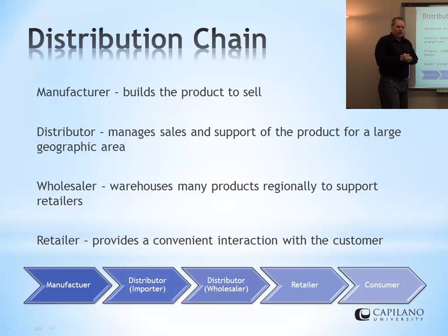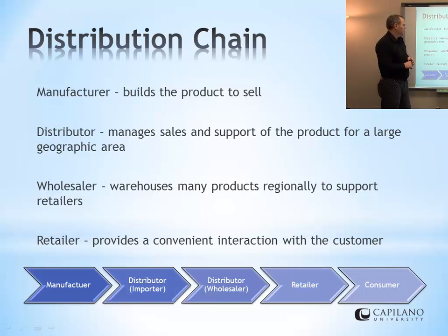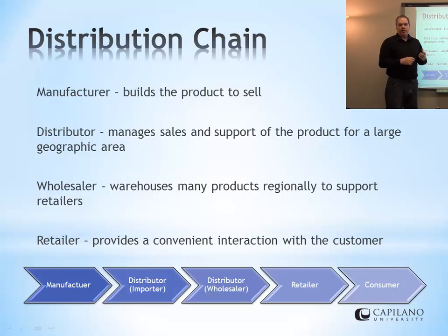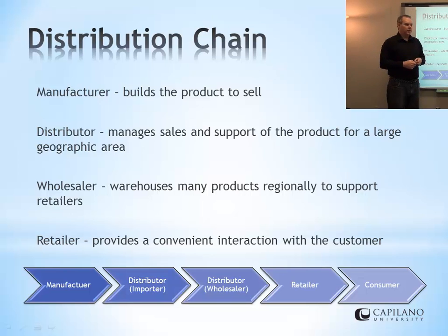Looking at each role: a manufacturer builds products to sell — they may have a whole supply chain before them for raw materials, but from our point of view, they make the product. The distributor manages products and supports large geographic areas — you might have one distributor in Canada for a specific product, with a tight exclusive relationship with the manufacturer. The wholesaler operates warehouses, such as one large warehouse in Vancouver, where lots of product comes in, gets broken into smaller aspects, and is sent to stores. A wholesaler deals with many different customers and may have ten different vendors of the same product.